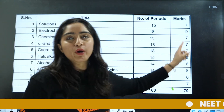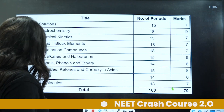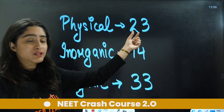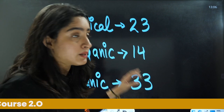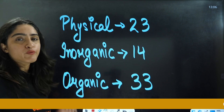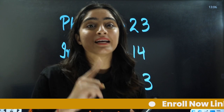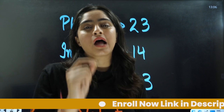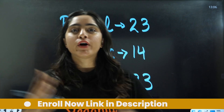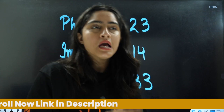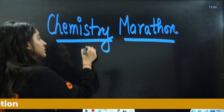Firstly, talking about the CBSE syllabus — these are the chapters and corresponding marks. Physical chemistry is for 23 marks, organic for 14 marks, and inorganic for 33 marks. I would advise you to start with physical chemistry first, then organic, then inorganic, and then revisit organic chemistry.